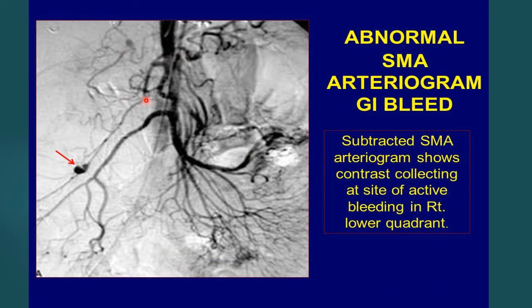This is the SMA angiogram, where the superior mesenteric artery is cannulated, dye is injected, and you can see extravasation of dye on the right side in the ileocolic artery territory, indicating the site of bleeding is in the cecum or ascending colon.